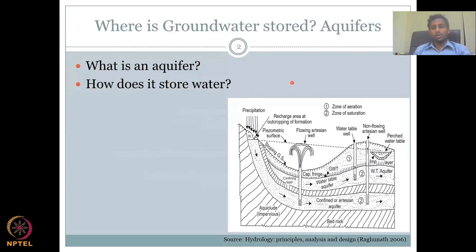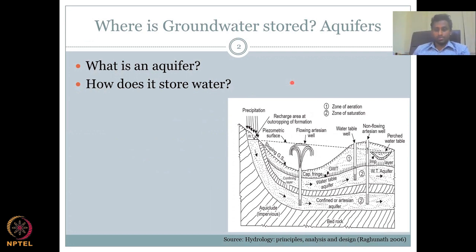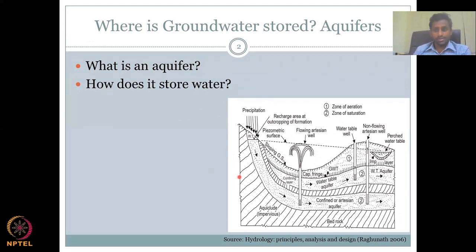So this week, the groundwater hydrology started with understanding where the water comes in through the hydrological cycle. We also looked into how the water space where water can be stored reduces as you go along the depth. When you go down deeper, the water would not be stored more because the size of the void spaces, the space where water can enter, is reduced drastically.